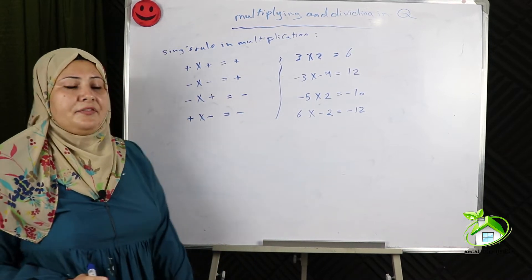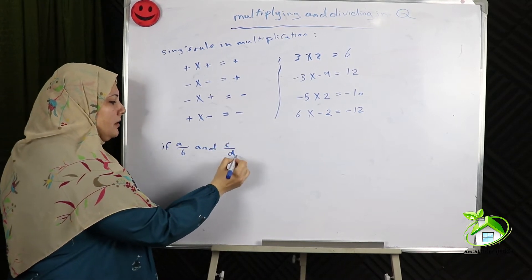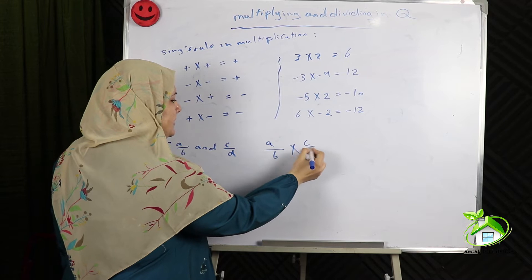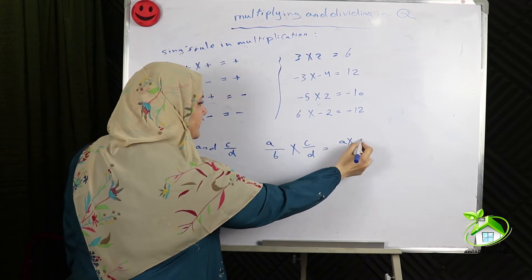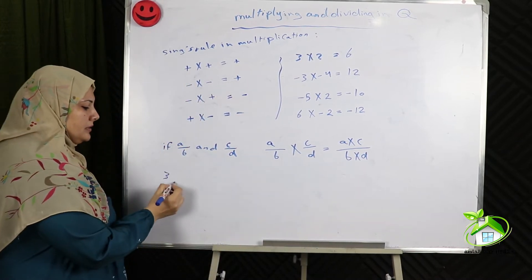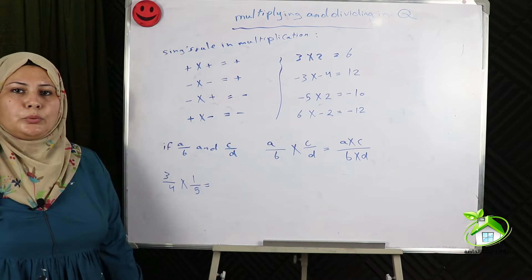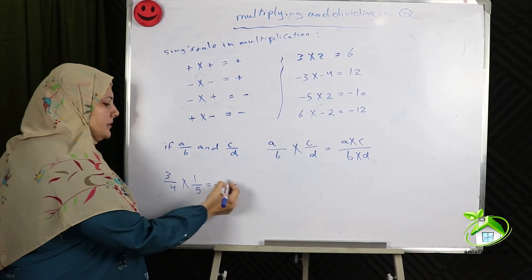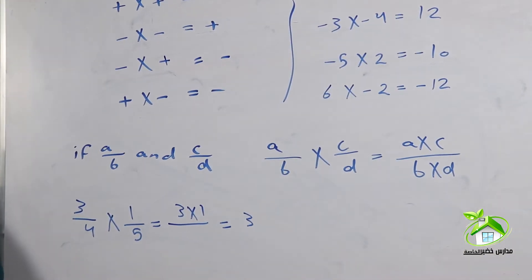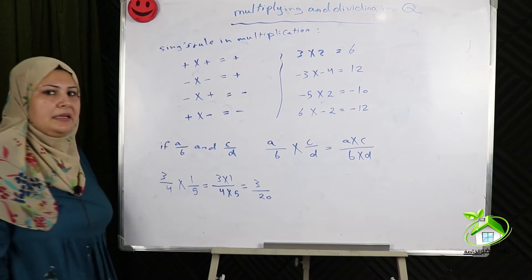Multiplication operation: if A over B and C over D are two rational numbers, then A over B times C over D equals A times C over B times D. For example, 3 fourths times 1 fifth. Multiply their numerators to get the numerator of the product: 3 times 1 equals 3. Multiply their denominators to get the denominator of the product: 4 times 5 equals 20.